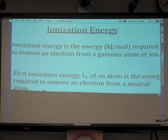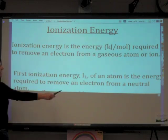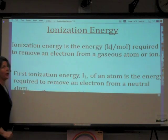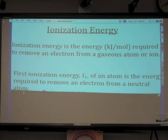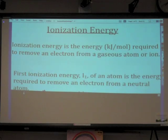First ionization energy — it's important — denoted I sub one, meaning this is the first electron being removed from the atom, is the energy required to remove an electron from a neutral atom. By definition, I sub one involves removing an electron from an atom that has equal numbers of protons and electrons.